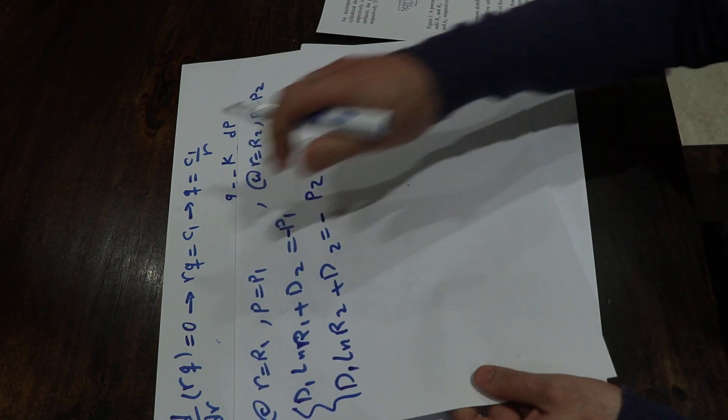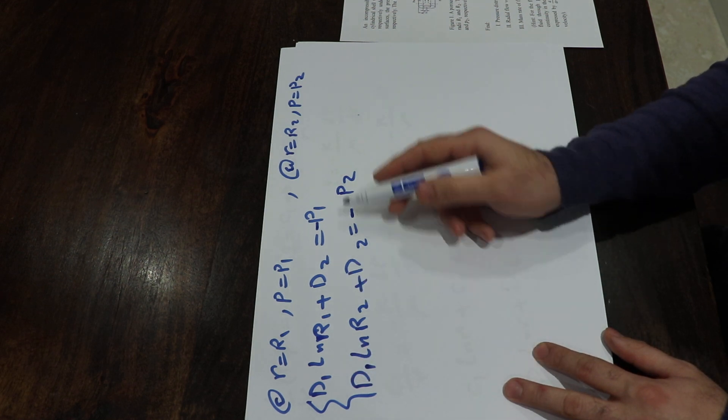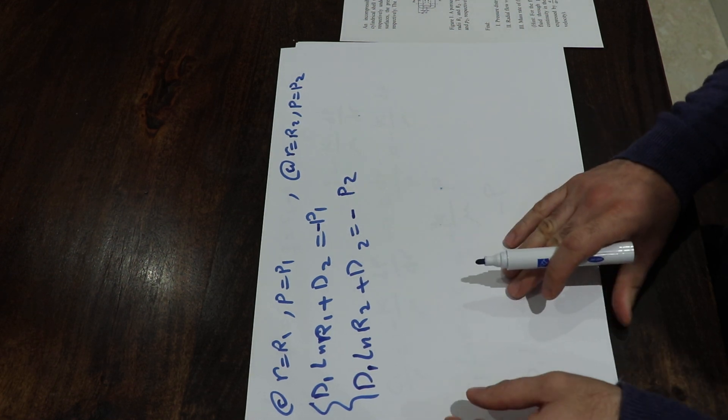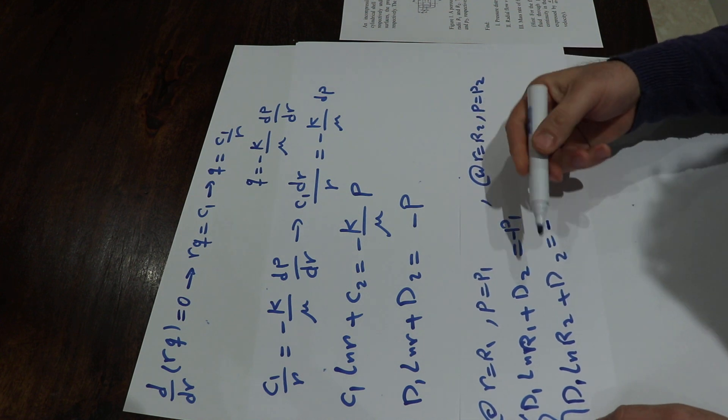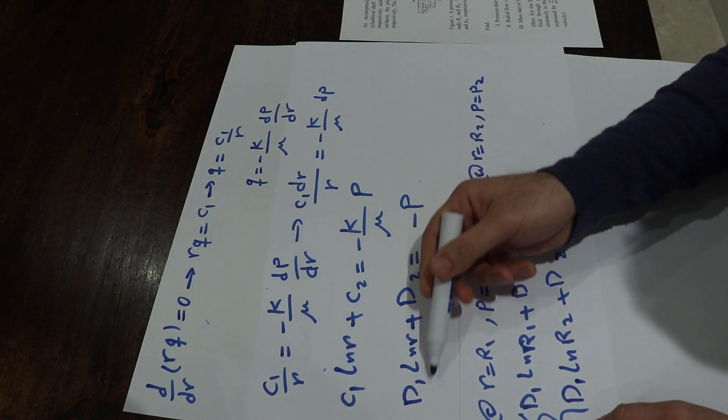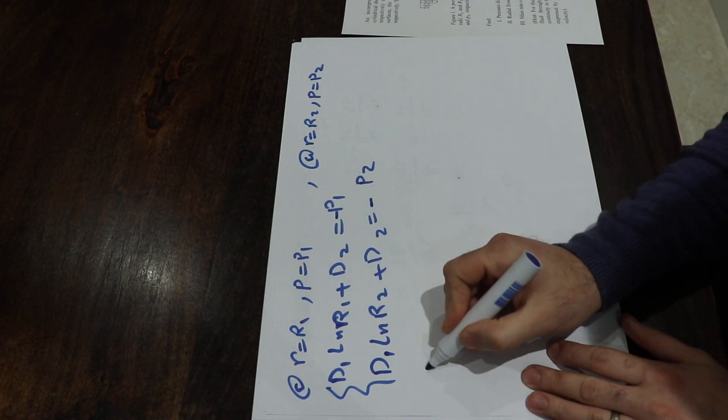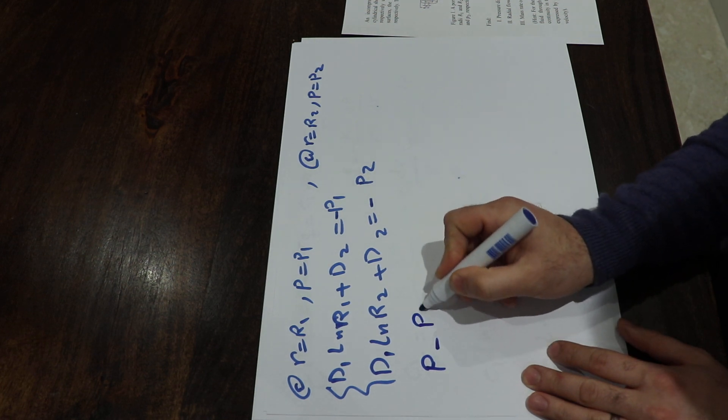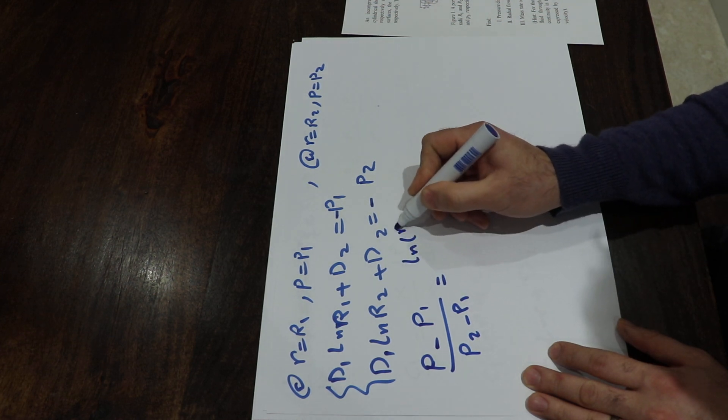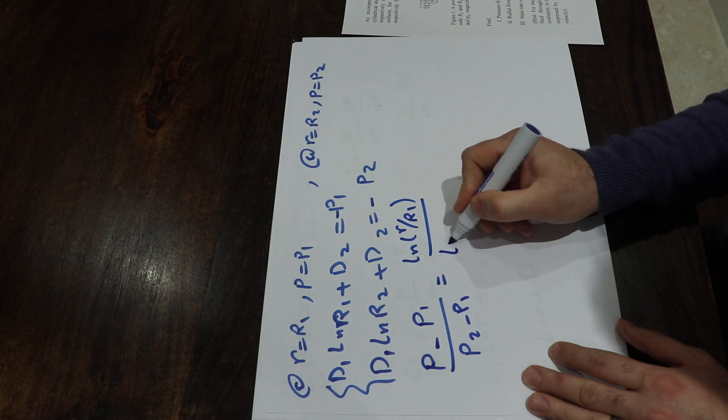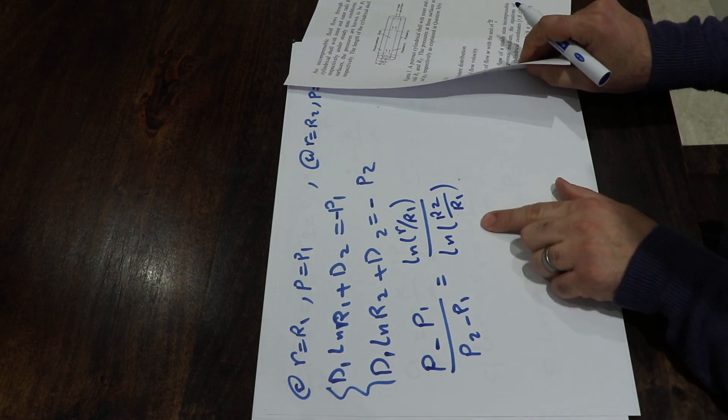So now I have two equations and two unknowns, D1 and D2. I can solve this equation simply and calculate the value of D1 and D2. If I substitute the calculated values into this equation and simplify—basically it's algebra—I will eventually obtain: (P minus P1) divided by (P2 minus P1) equals ln(R/R1) divided by ln(R2/R1). And that's the solution to part one of this question.